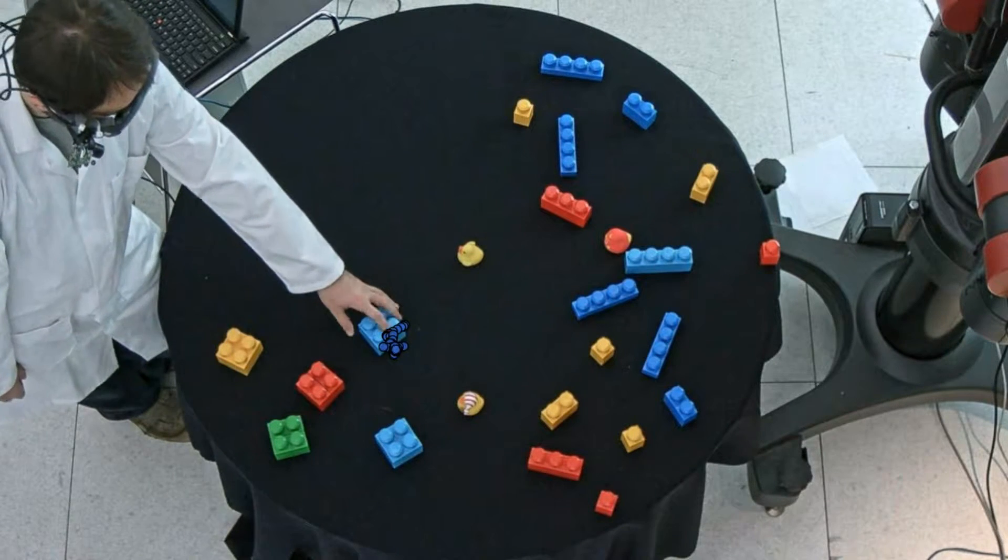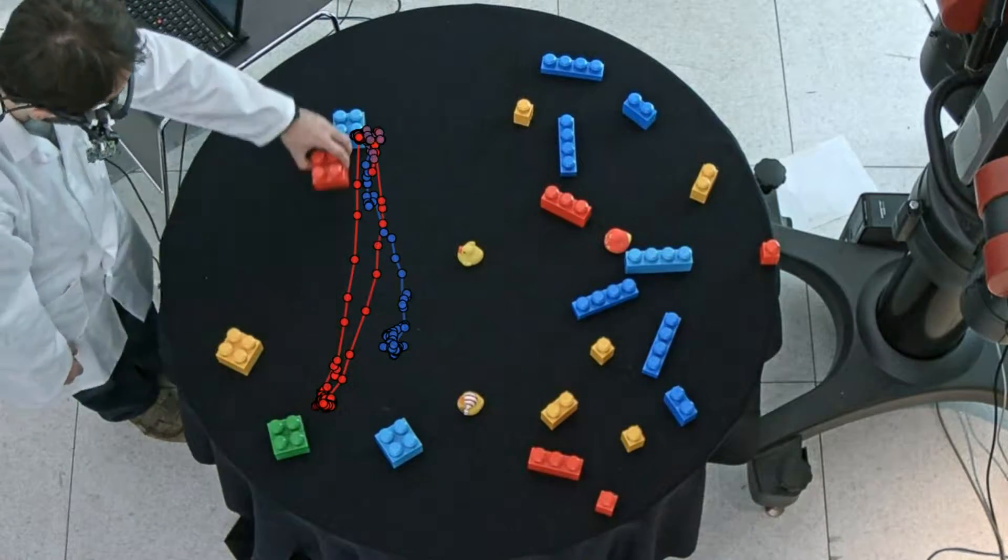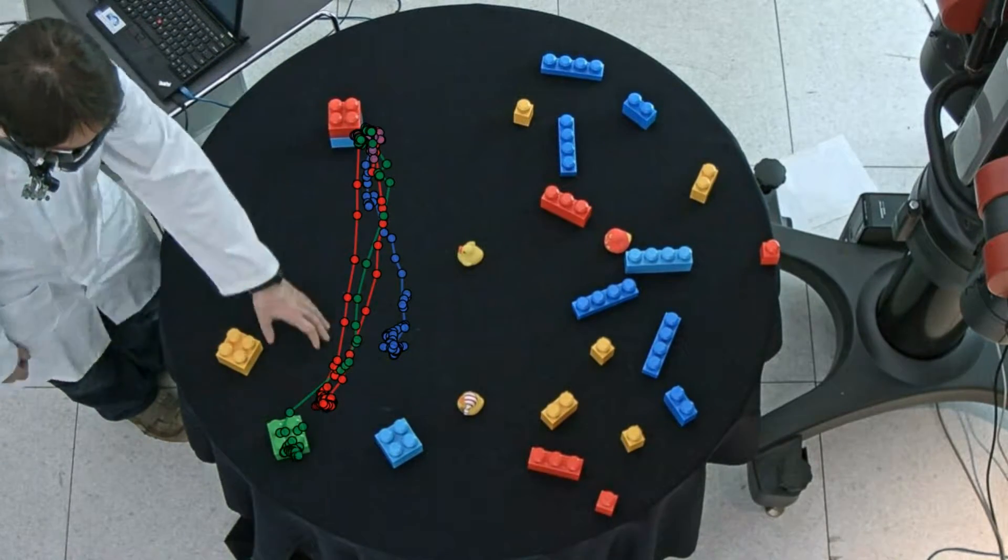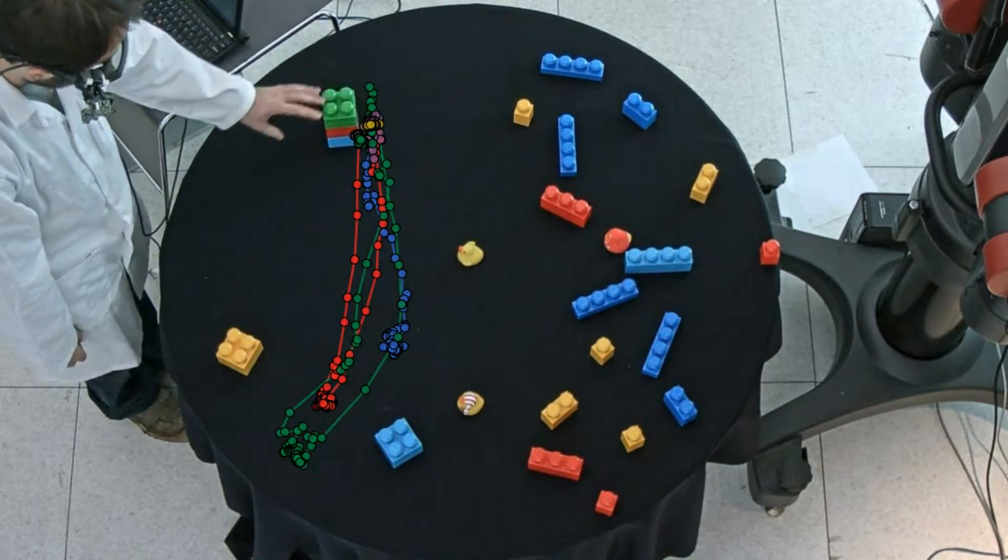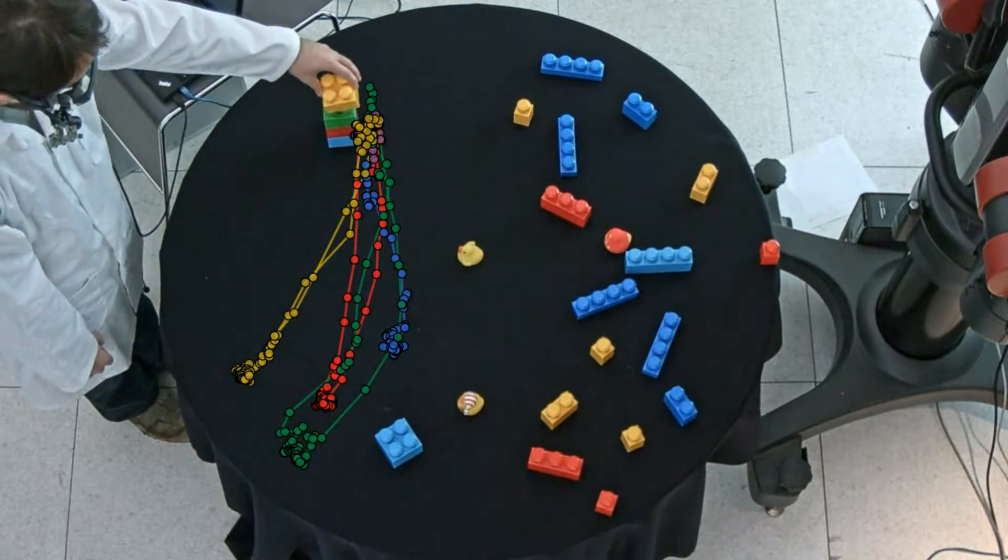First we segment the fixation trajectories by inferring which fixations belong to each action in the plan. Then, based on this information, we infer the location of each item of interest in the environment.